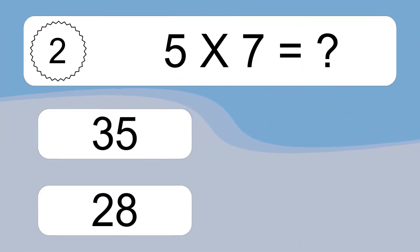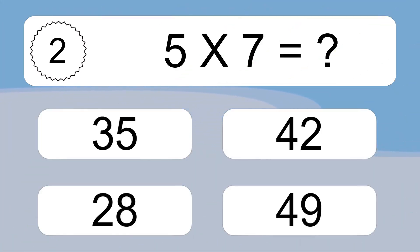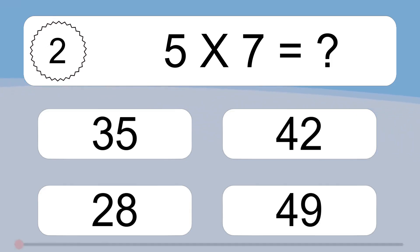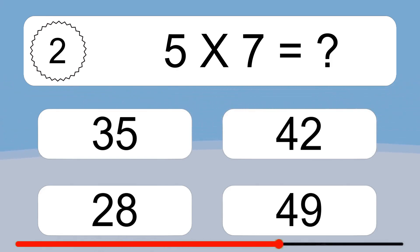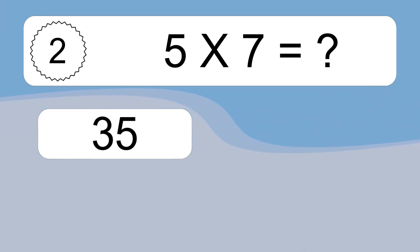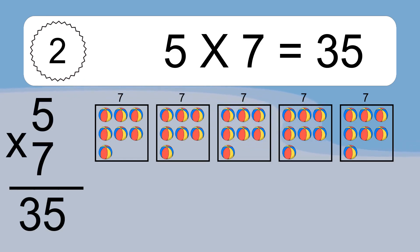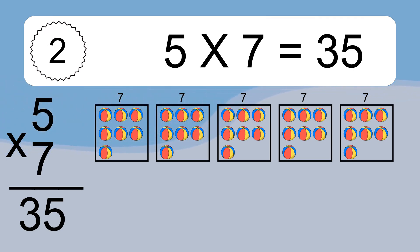5 times 7 equals what? 5 times 7 equals 35. We have 5 boxes, and each box has 7 colorful balls inside. If you count all the balls in all the boxes together,